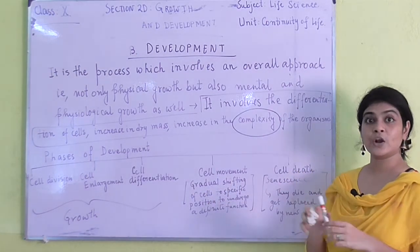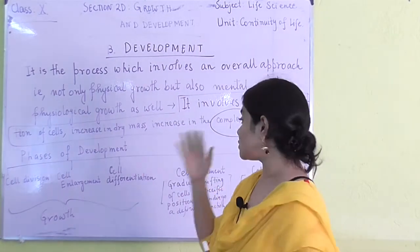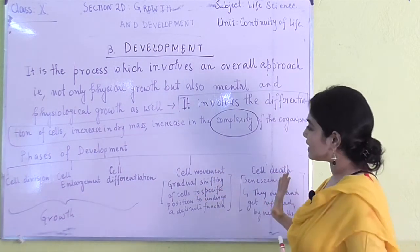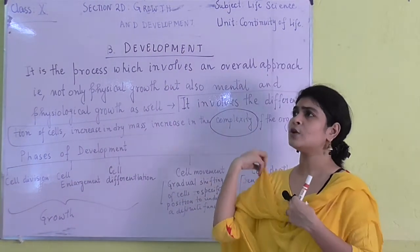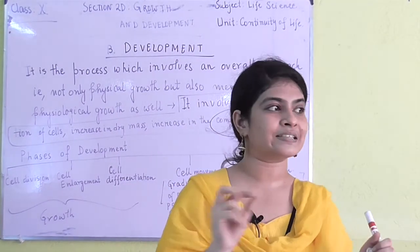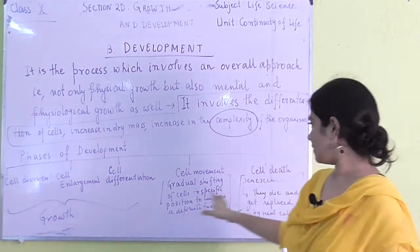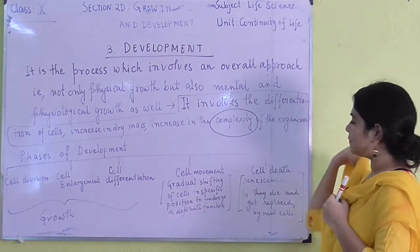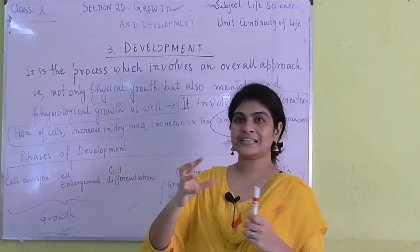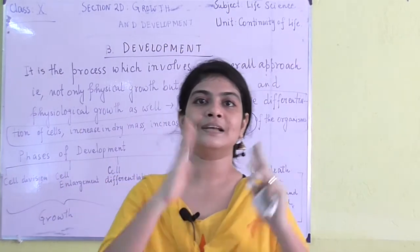The last phase is cell death. We cannot consider cell death as growth, but when we are talking about development we should definitely take cell death into account. Once the cell has matured totally and done all its functions, it will die. Each and every cell has a minimum lifespan — after that lifespan it will die. That is senescence. The cells die and get replaced by new cells. This entire process from birth to death is entirely included under development.